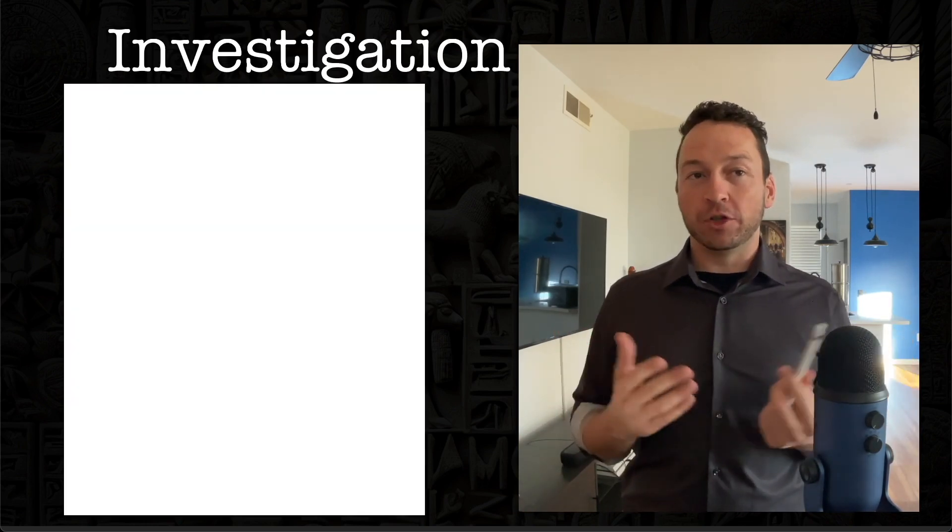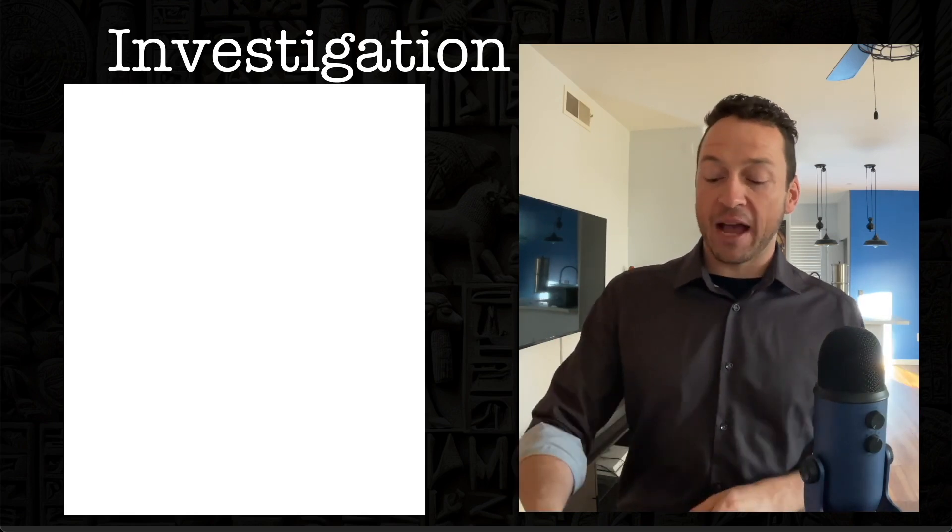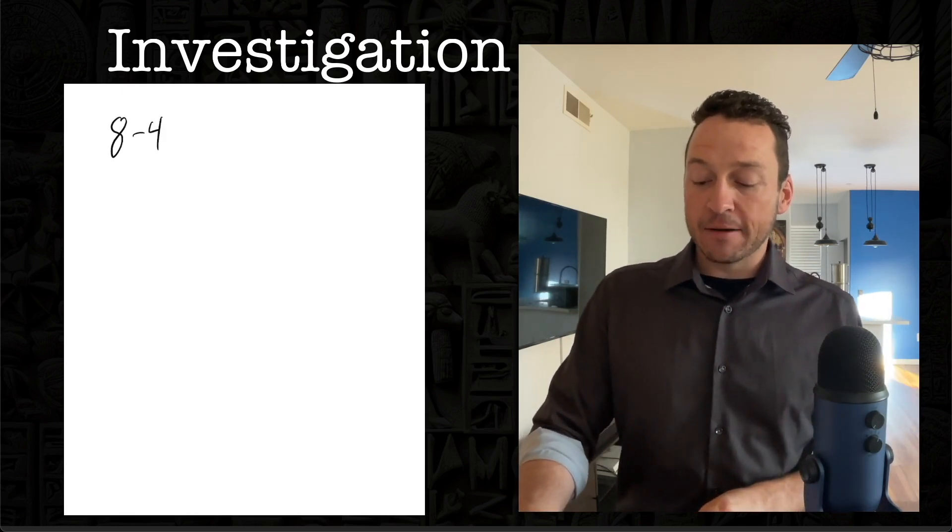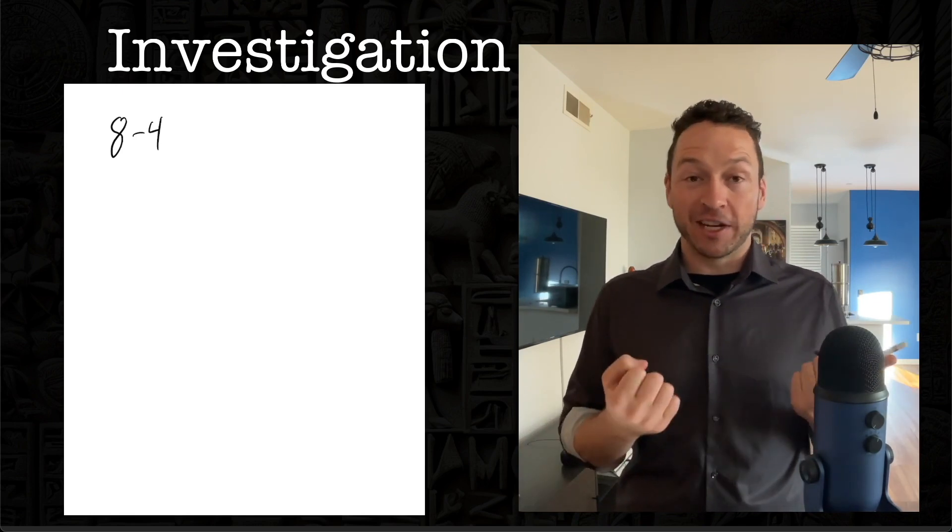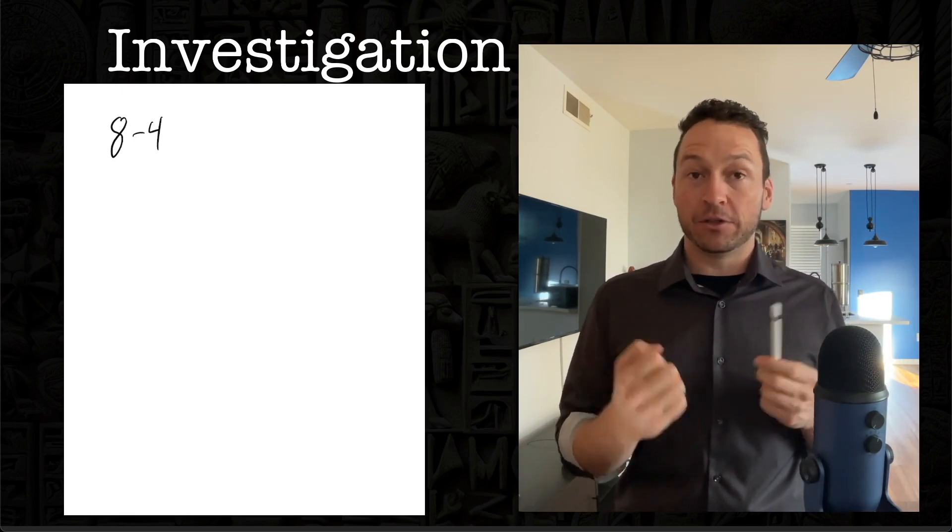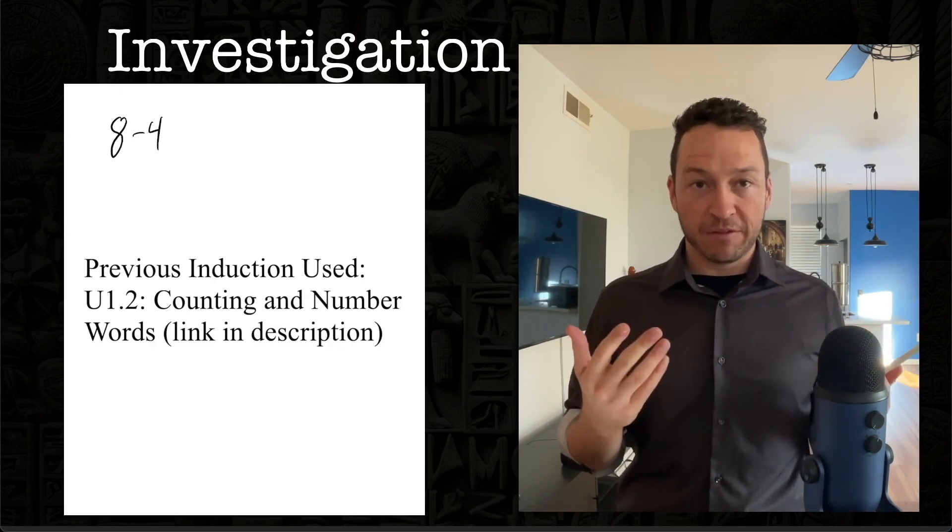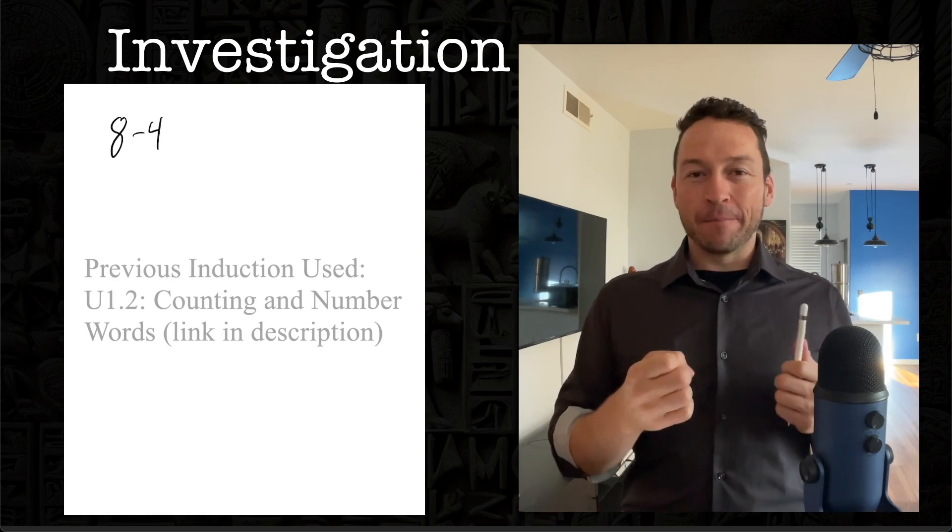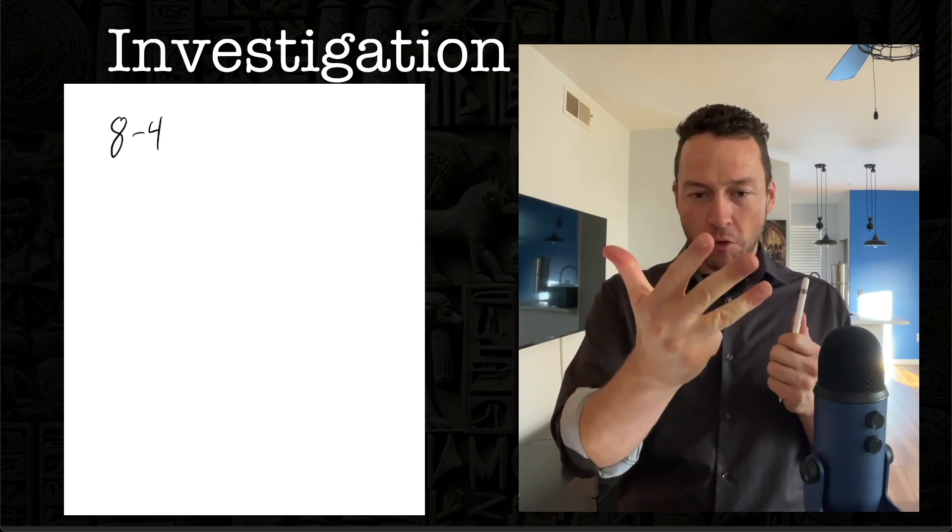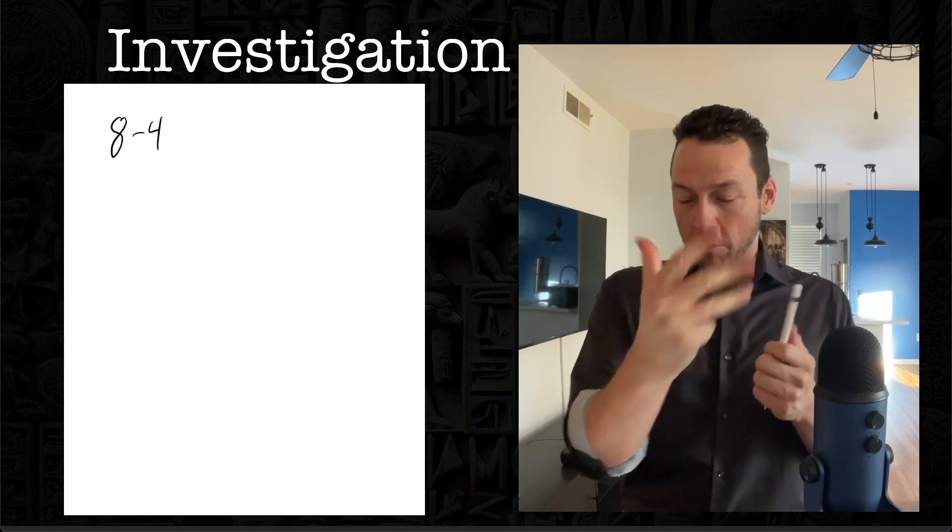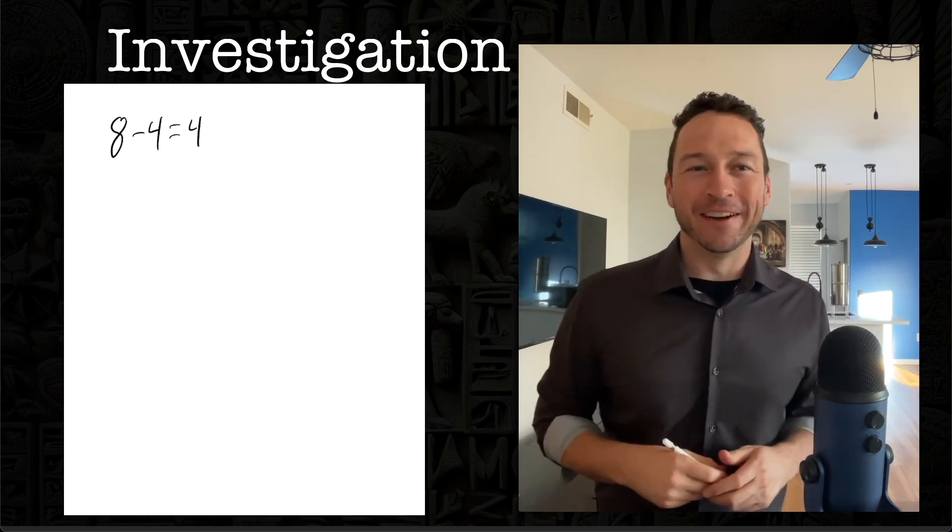So Algamesh is going to start with small numbers to see if he can figure out how to subtract. He's going to start with eight minus four. And so like last time with addition, he figures he's just going to count backwards using his fingers. So he's going to count backwards: seven, six, five, four. Okay, so he's taken away four. He can see that eight minus four is four.